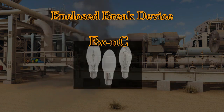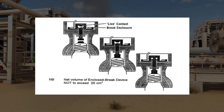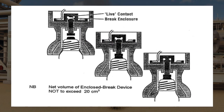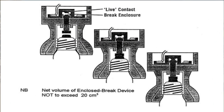Enclosed break device: this technique is used in, for example, the lamp holders of Type N apparatus. A typical lamp holder has two sets of contacts. One set of contacts is enclosed in what is effectively a flameproof enclosure in which the free internal volume must not exceed 20 cubic centimetres. This enclosure is designed to withstand an internal explosion, and the voltage and current limitations are 690 volts and 16 amperes respectively.